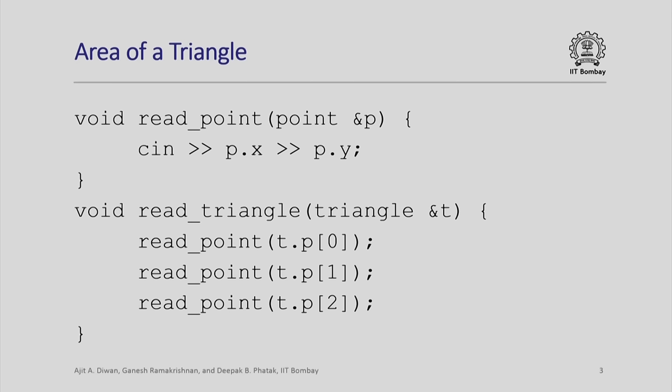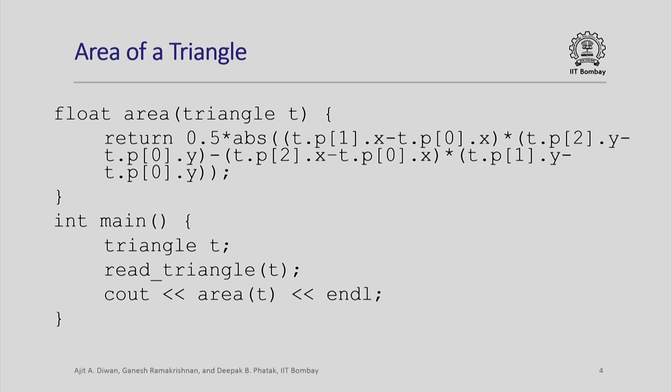Similarly, we need a function for reading a triangle because there is no built-in such function. A triangle is a set of 3 points, so we call the function for reading a point 3 times inside this read triangle function. It reads each individual point of the triangle, which in turn reads the 2 coordinates of the point. This is the area function — we need to define how to compute the area of a triangle. From your geometry classes, you would know the formulas for computing the area. This uses the coordinates of the 3 corners of the triangle, computes the area, and returns it. Our main function simply calls the read triangle function, calls the area function for that triangle, and outputs the area.